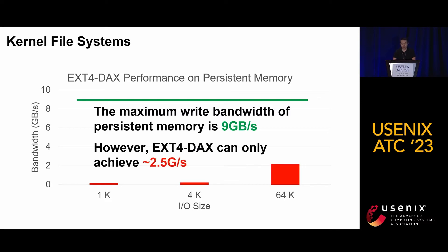As we can see, while the persistent memory upper bound write bandwidth is about 9 gigabytes per second, the EXT4-DAX file system can only achieve about 2.5 gigabytes per second when the I/O size is 64K. This gap becomes even larger when the I/O size is smaller. It clearly shows that the kernel file system, Linux EXT4-DAX, cannot fully exploit the available PM's bandwidth.